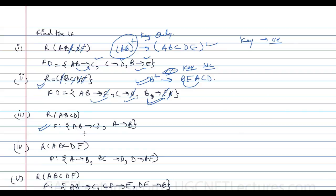For question three, relation R(A,B,C,D): checking the right-hand side, C, D, and B are present, so only A is not present. Taking A closure: with A we identify A, then B, and with AB we identify C and D. Therefore A is the candidate key — it is also a super key, since every candidate key is a super key.